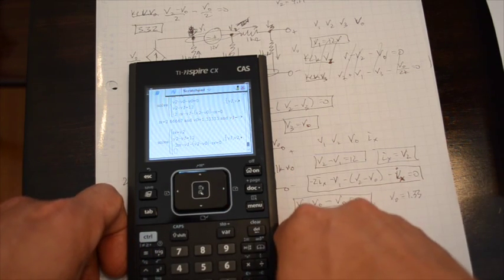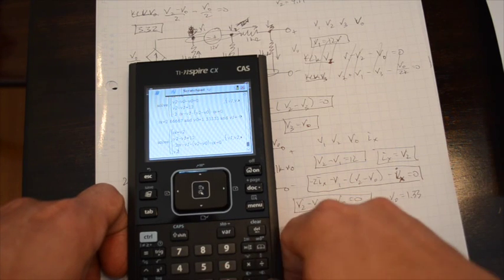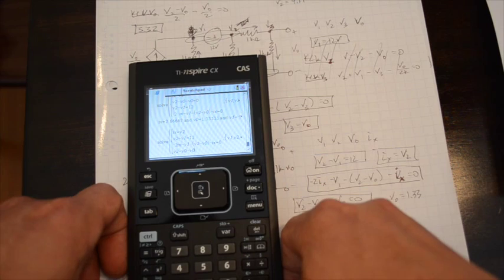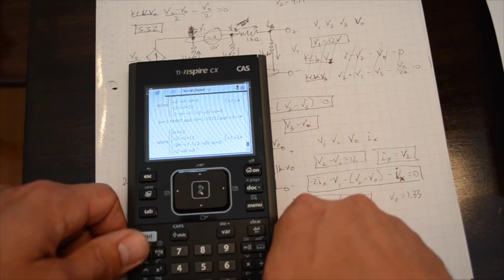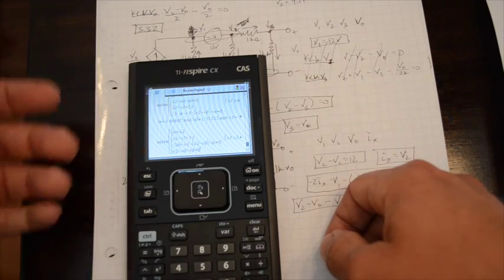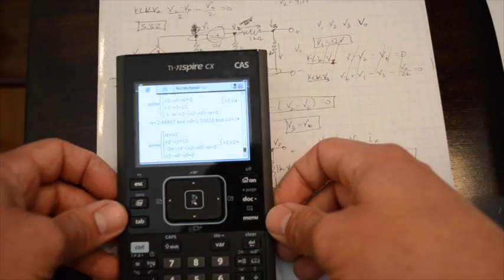Scroll down, then we've got V2 minus V0, minus V0, equal to 0. And once you've got those input, you see you didn't have to manipulate any of the numbers or anything like that. It's all right there.